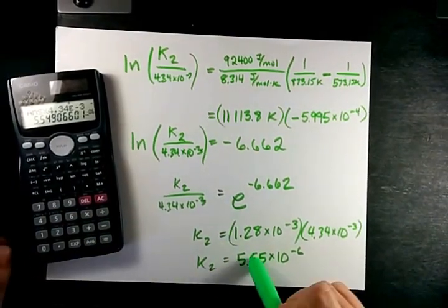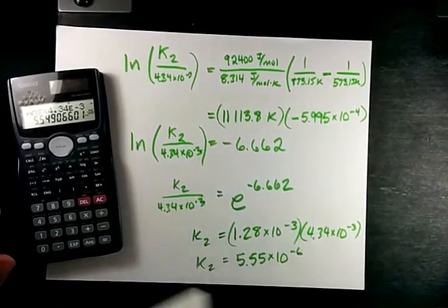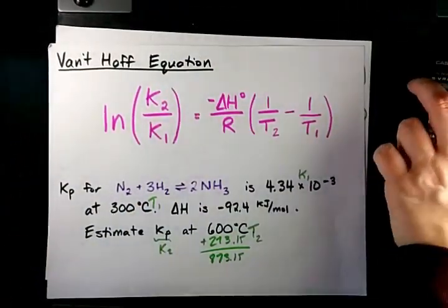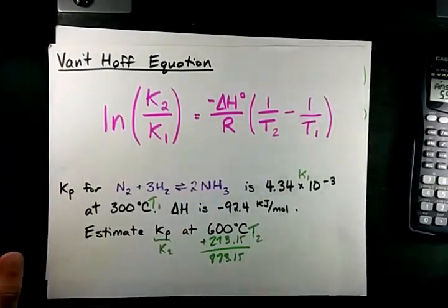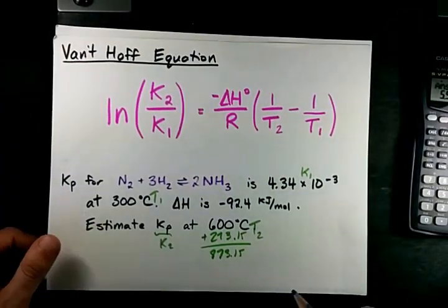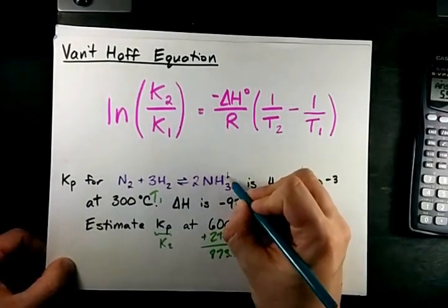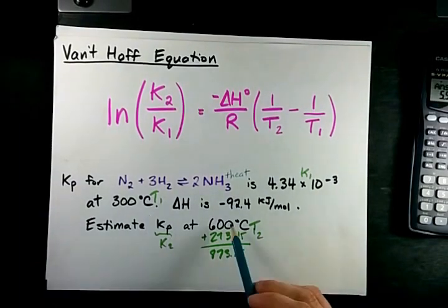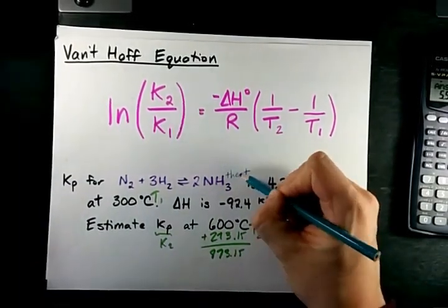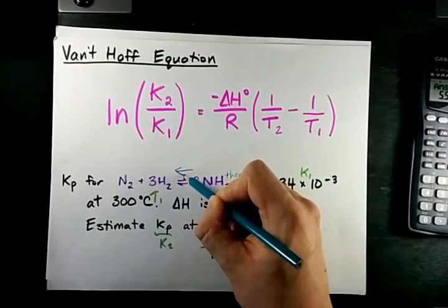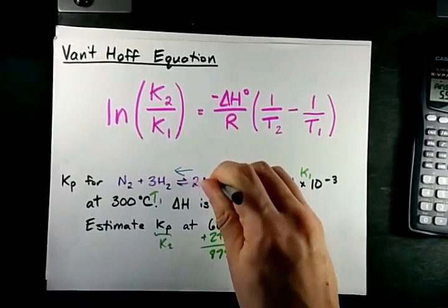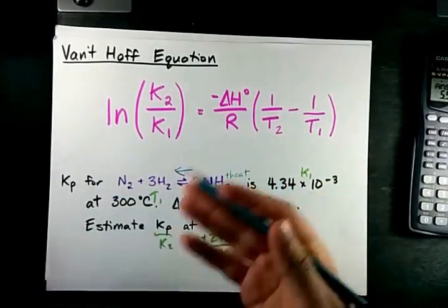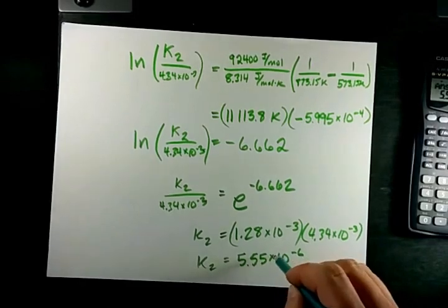Okay. That is a lower equilibrium constant than it was at 300 degrees Celsius. Let's check to make sure that makes sense with Le Chatelier's principle. If this is an exothermic reaction, I have plus heat as a product. And increasing the temperature is like adding heat, which should shift the equilibrium that way. Amount of products goes down. Amount of reactants goes up. And so K should go down as well. Story checks out. I believe this number.